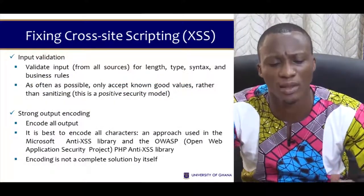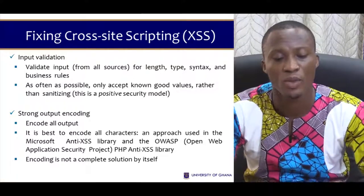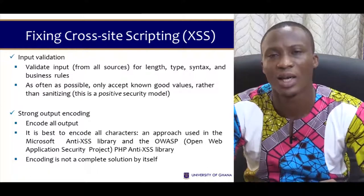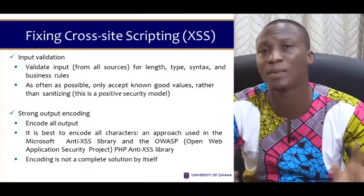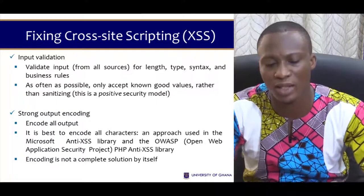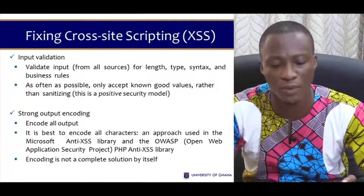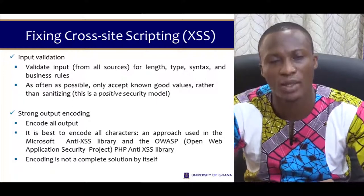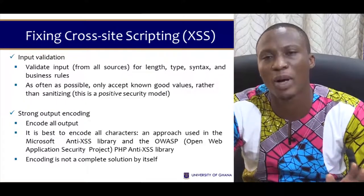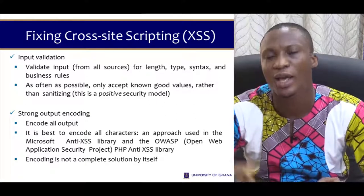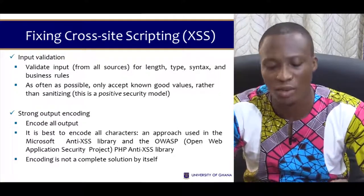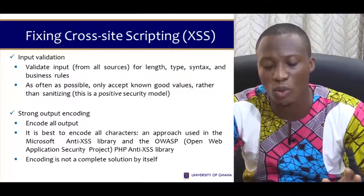How can we fix cross-site scripting? First, look at input validation — validate every input that is provided, including the length, type, syntax, and any applicable business rules. As often as possible, only accept known good values — real values that are supposed to be provided. This is called a positive security model. We also have strong output encoding: encode all your outputs, and it is best to encode all characters. This approach is used in the Microsoft Anti-Cross-Site Scripting Library and by the Open Web Application Security Project (OWASP), which also deals with the PHP anti-XSS library.